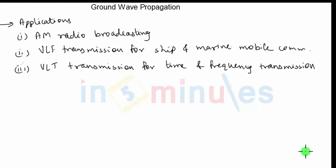Let us now discuss a few important applications of ground wave propagation. Three important applications have been listed on the screen. The first application is AM radio broadcasting. AM is one important part of this course — it is amplitude modulation. We will discuss everything about AM: the transmitter, the receiver, and various circuits in detail. Ground wave propagation is used for AM radio broadcasting.